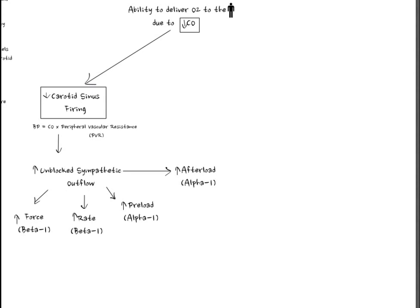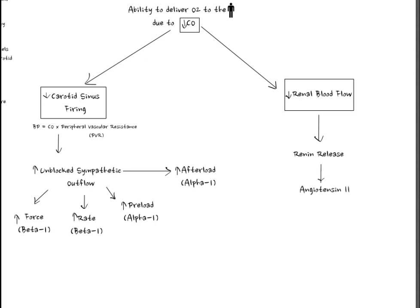Decreased cardiac output also manifests itself in long-term blood pressure control. Decreased cardiac output decreases blood flow to the kidney, and that decreased blood flow to the kidney results in the release of renin. Renin eventually gets converted into angiotensin 2.